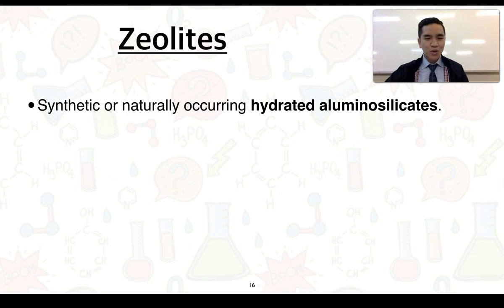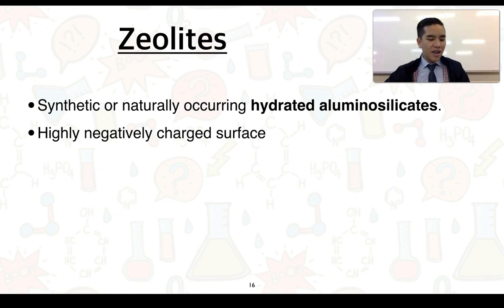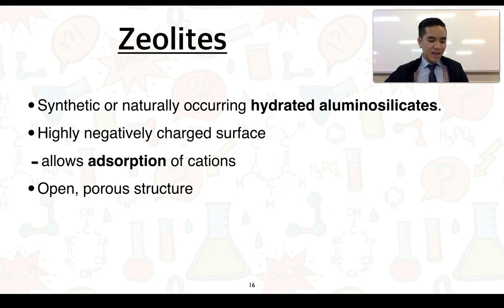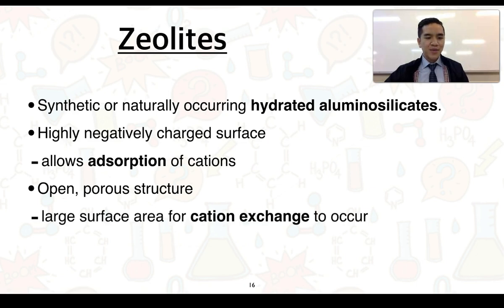To help combat the issue of hard water, we can use substances called zeolites. Zeolites are synthetic or naturally occurring hydrated aluminosilicates. Like clays, which are silicates or aluminosilicates, zeolites are highly negatively charged. What this allows for is the adsorption of cations on the surface of this zeolite. Another feature of zeolites is that they contain an open porous structure. This provides a large surface area for cation exchange to occur. So in essence, zeolites are going to help by allowing cations to exchange. So those calcium and magnesium ions in hard water to be replaced by something that will help soften it. And because of that, we can classify zeolites as water softeners.